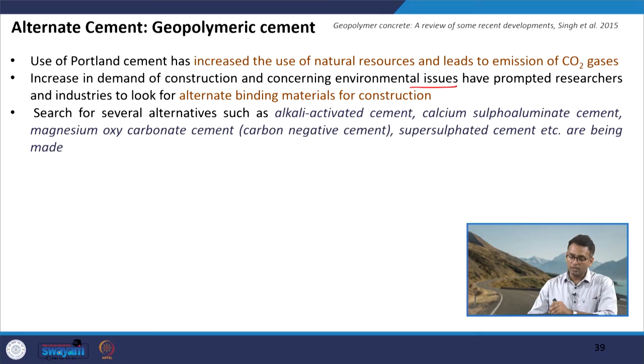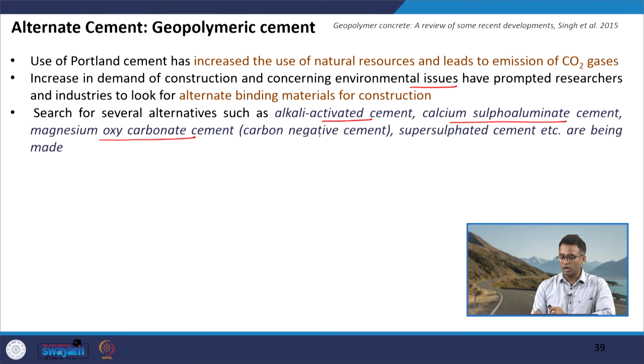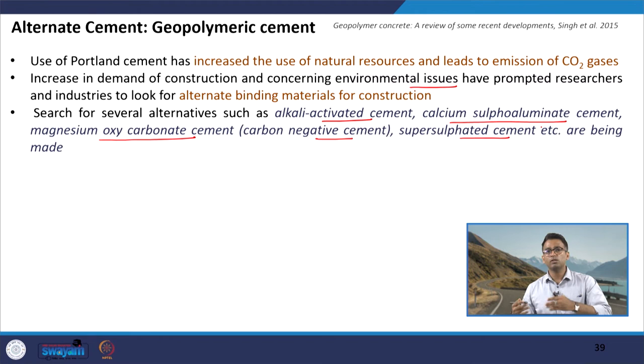Geopolymer concrete is one such material that can satisfy present demand and serve as an alternative. Various alternatives have been discussed: alkali-activated cement (another name for geopolymeric cement), calcium sulfoaluminate cement, magnesium oxy-carbonate cement (carbon-negative cement), and super-sulphated cement. There are similar products being made and used.